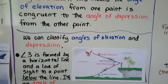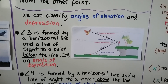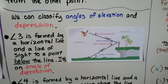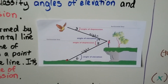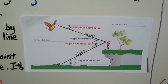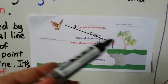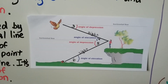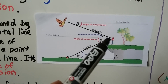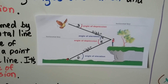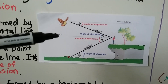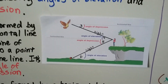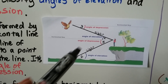We can classify angles of elevation and depression. Angle 3 by the bird is formed by a horizontal line and a line of sight to a point below the line — to the woman — so that's an angle of depression. Angle 4 from her eyes to the bird is formed by a horizontal line and her line of sight to a point above the line, so that's an angle of elevation.